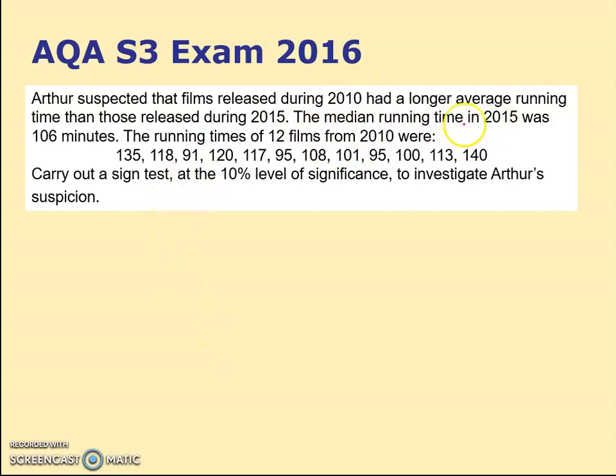Arthur suspected that films released during 2010 had a longer average running time than 2015. The median running time in 2015 was 106 minutes. He thinks 2010 was higher. H0: median equals 106. H1: median is greater than 106. It's a one-tailed test with 12 numbers, chance of being higher or lower is a half. Checking which are above 106: above, above, below, above, above, above, below, below, below, above.